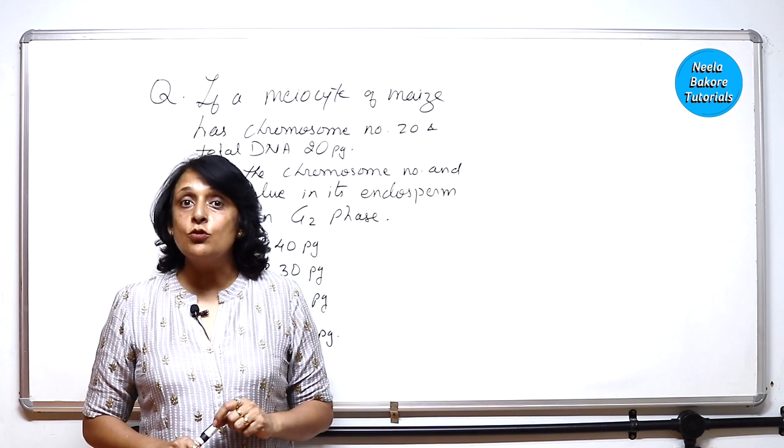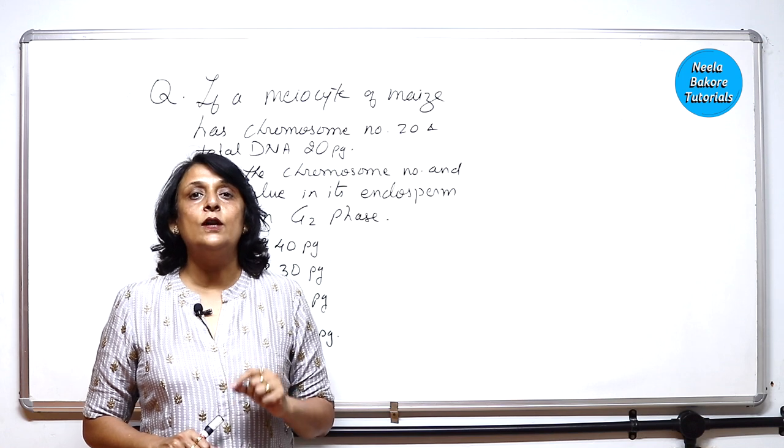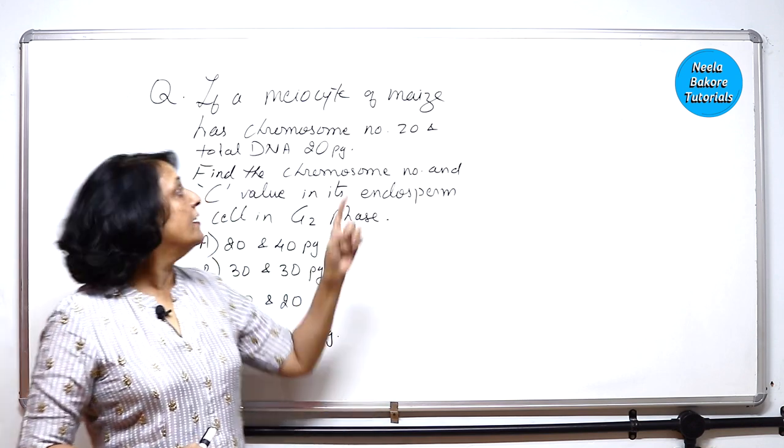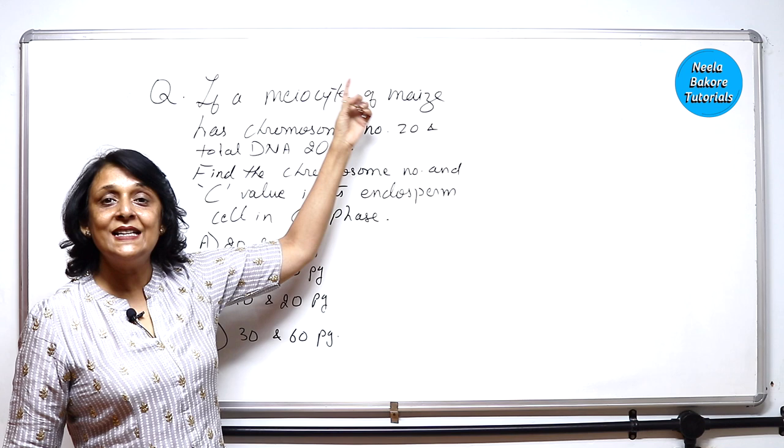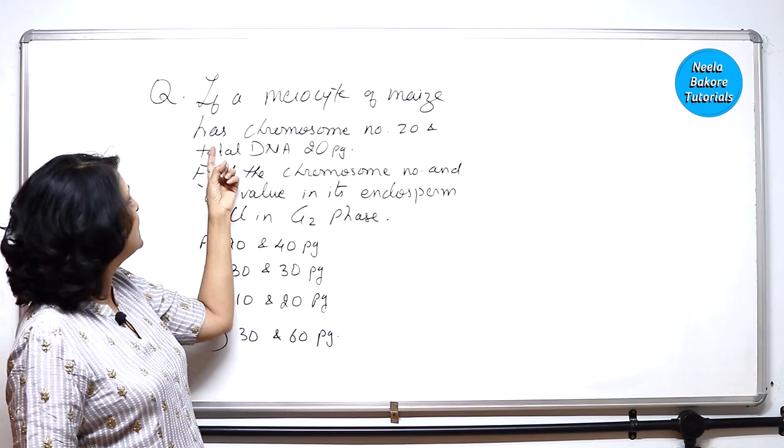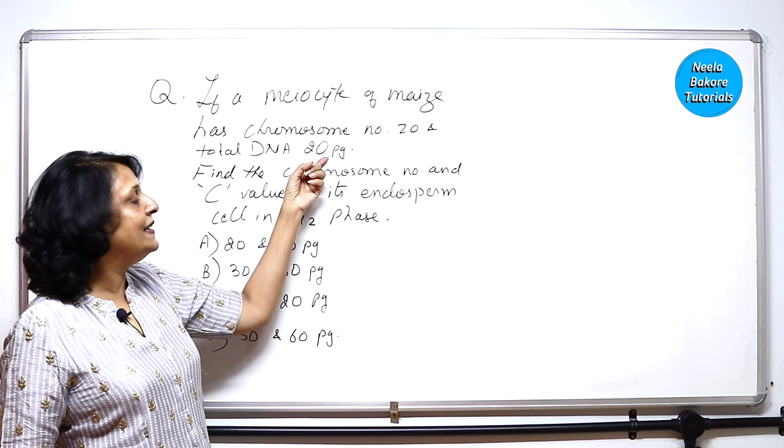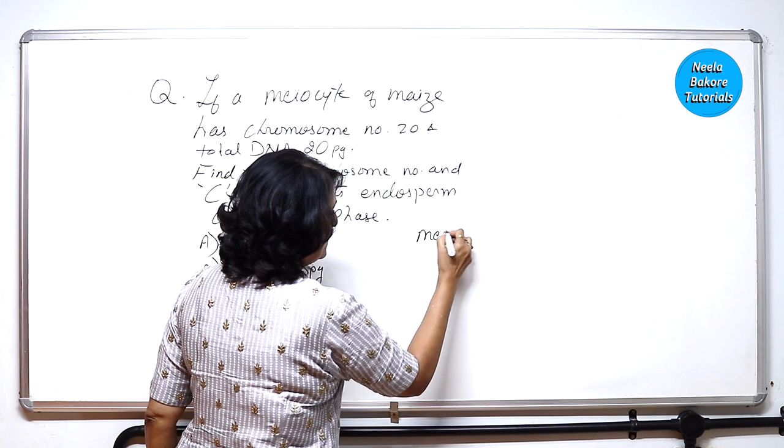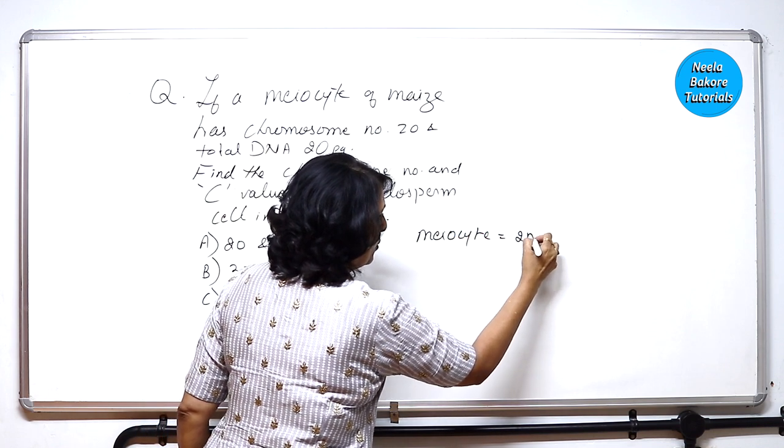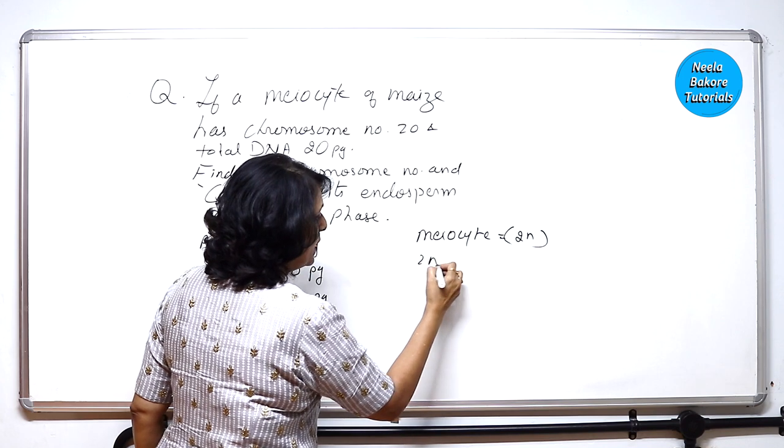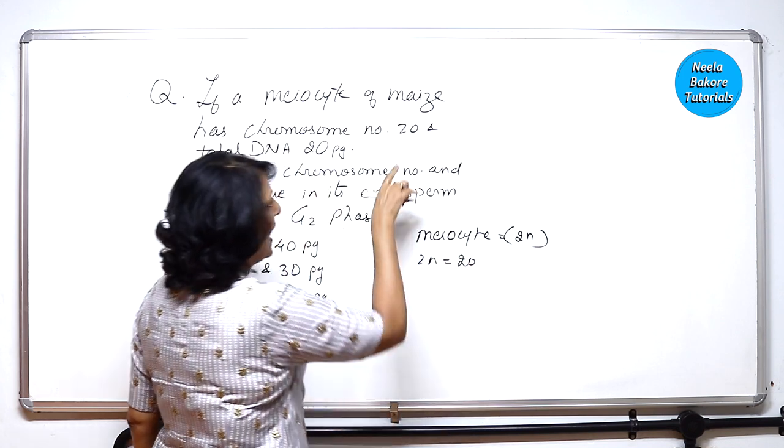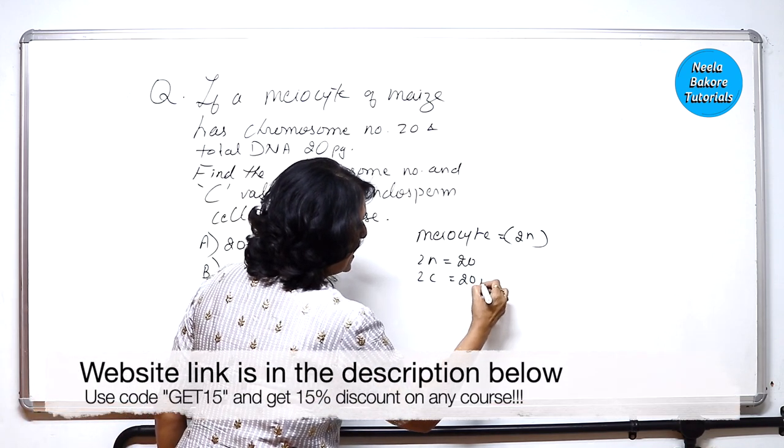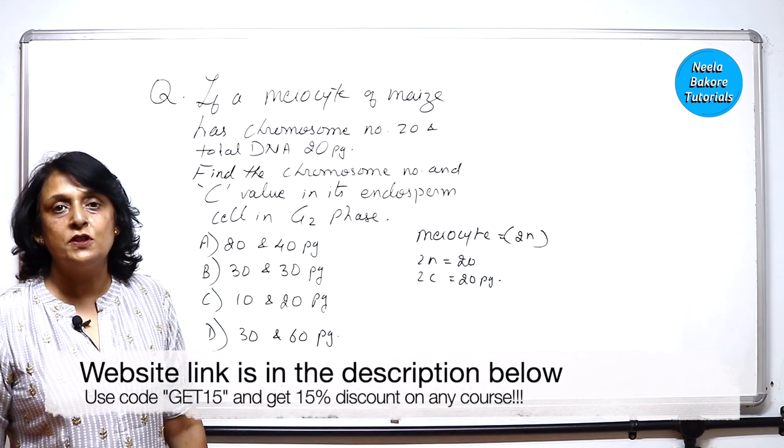Meiocytes are those cells which are capable of undergoing meiosis and they are always diploid. So when the information says that the maize meiocyte has chromosome number 20 and the DNA content is 20, what is the information given? Meiocyte is diploid and 2N is given, that is 20 chromosomes, and in those 20 chromosomes the total DNA content, that means 2C, is 20 picograms. This is the information which is given.